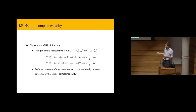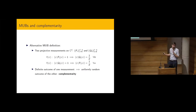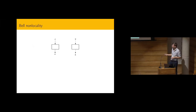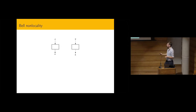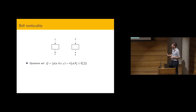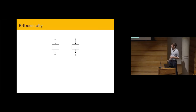We will look at the use of MUBs in quantum information through the lens of Bell non-locality. In a Bell scenario, we think of two parties, Alice and Bob, each performing actions with classical inputs and outputs.